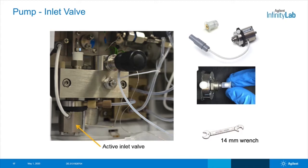Here's a look at an Agilent pump head with an active inlet valve, which is quite common. It has an electronic cable connection, which you disconnect from the pump after shutting off the power to the module. Then, unscrew the valve and replace the inlet filter cartridge as shown. Different instruments have slightly different designs. For example, the Agilent 1290 LC uses a passive inlet valve instead — that is a one-piece design.